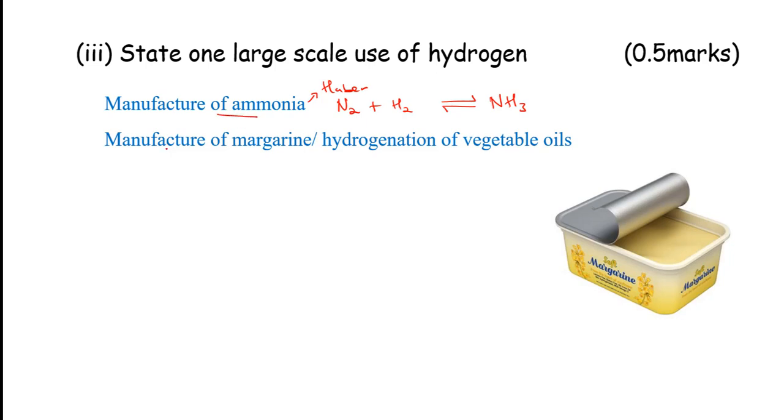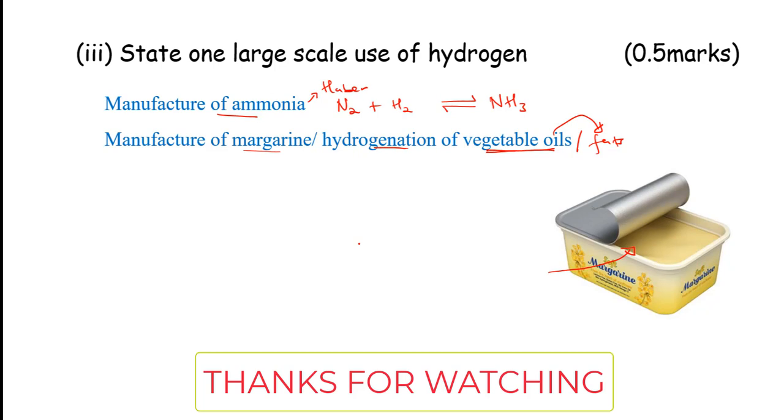Manufacture of ammonia to manufacture of margarine. Or basically, we tend to produce fats. Manufacture of fats. You can say manufacture of fats. When we hydrogenate vegetable oils, we tend to produce fats. Manufacture of this margarine is one way in which hydrogen is used. When you bubble hydrogen through vegetable oils, they will tend to solidify to form our fats.